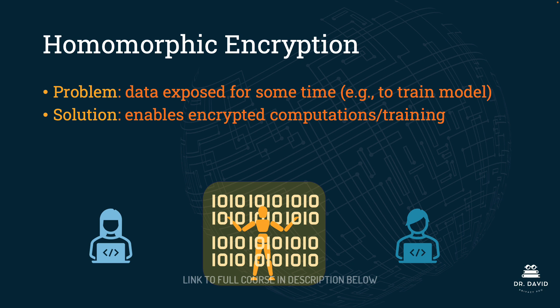The solution that homomorphic encryption provides is that it enables encrypted computations and training, so that data is never exposed. I can put all of my data in a data warehouse or on a server, and using homomorphic encryption, the model can train on the data while it remains encrypted — the data is never exposed. However, this is not a great technology for data at scale. So if you're asked on the exam to choose which of the four privacy-enhancing technologies is most feasible, it is not going to be homomorphic encryption.